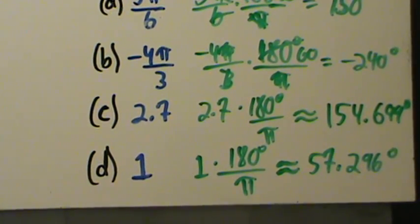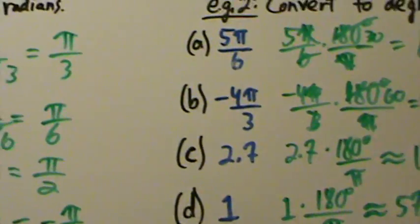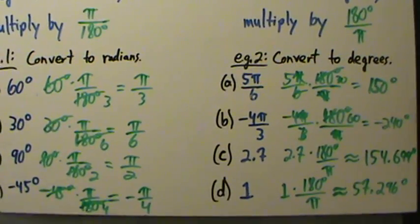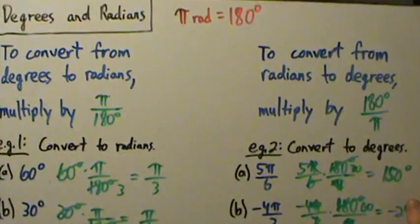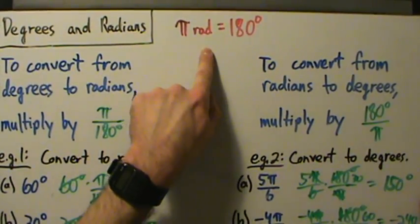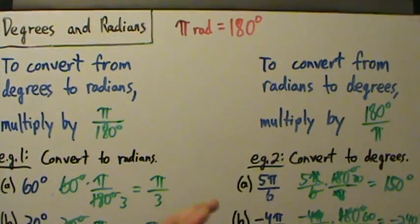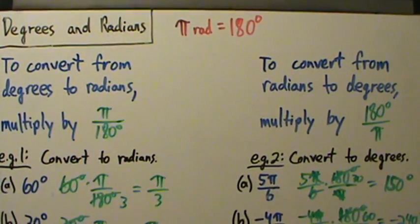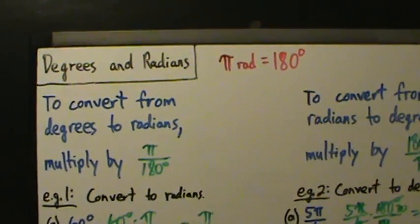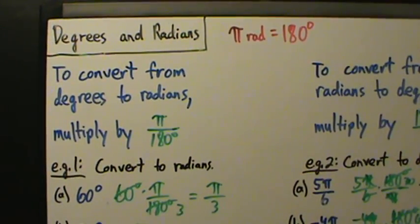So those are some examples of converting between degrees and radians. Remember: for degrees you need the degree symbol, but for radians you can say rad, say radian, or just drop the notation altogether — like writing just pi, for example.